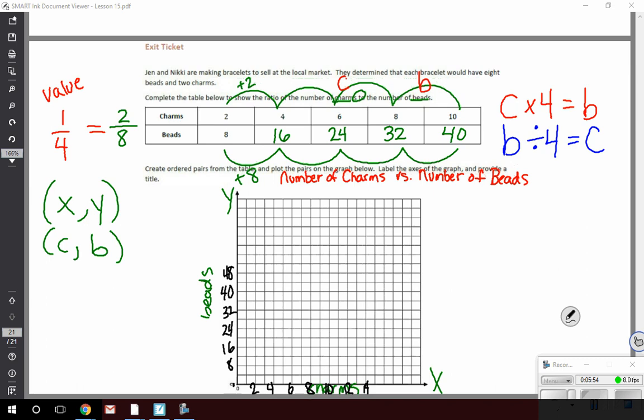Now, when it talks about ordered pairs, it has to be X, Y. So here's my X, here's my Y, my charms and my beads. My first ordered pair to graph would be two to eight. So I'm going to find two on my charms and go up to eight on my beads. And there's my first point. Looking at the chart, the next one is going to be four to 16. So I'm going to go to my graph, find four charms and go up to 16 beads and make a point there. And we'd continue going through.